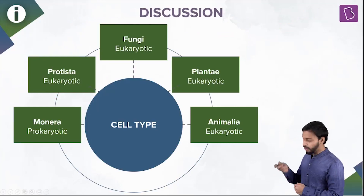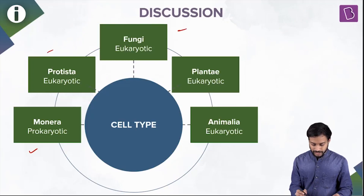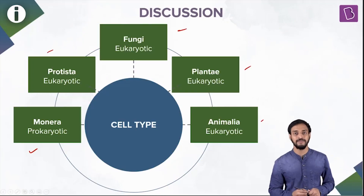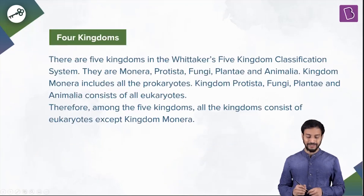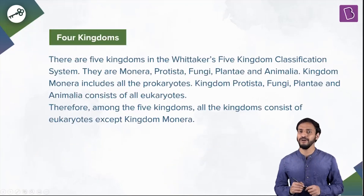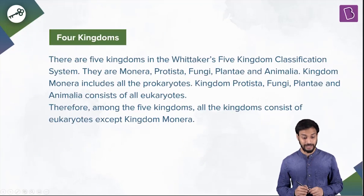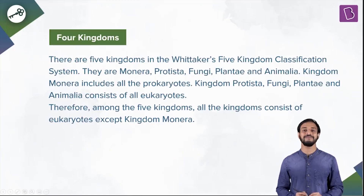Yes. Monera are prokaryotes. Fungi are eukaryotes, Plantae and Animalia are of course eukaryotes. So the answer is four kingdoms. I am sure you have answered this correctly.